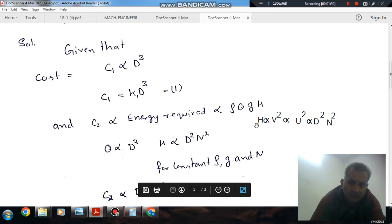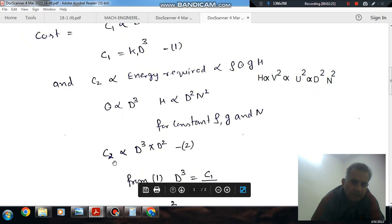So now H is directly proportional to V², because from the equation v equals square root of 2gh, H will be V² and V² is proportional to D². So H will be directly proportional to D². Now keeping ρ, g and n constant, we can have C2 as directly proportional to D³ times D².